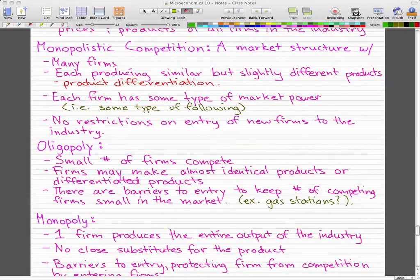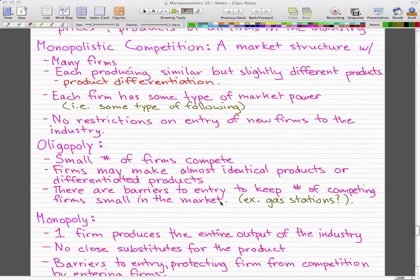Oligopoly has a small number of firms that compete against each other. The firms might produce almost identical products or differentiated products, and there are barriers to entry to keep the number of competing firms small in the market. For example, you could think gas stations. Gas stations are oligopoly.